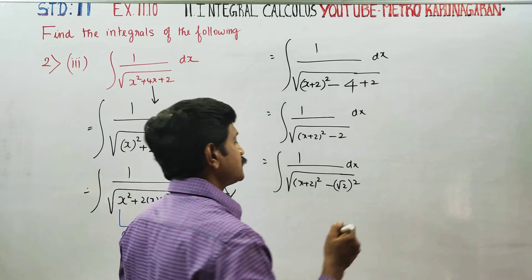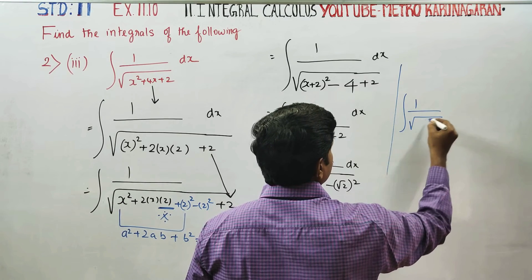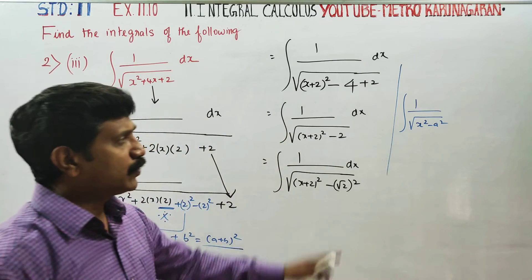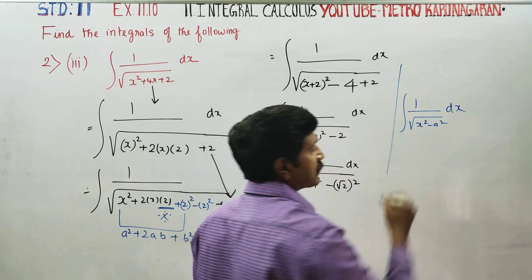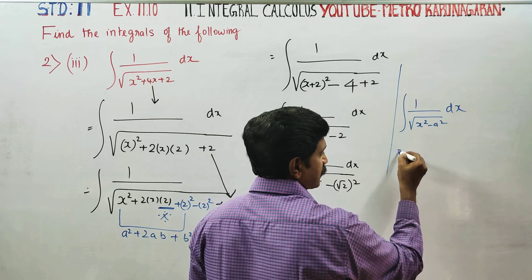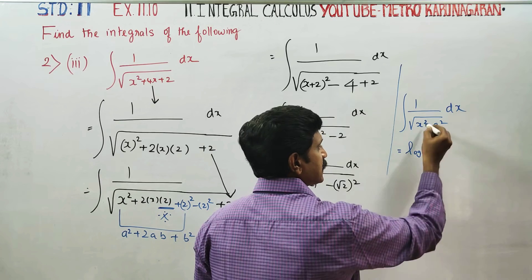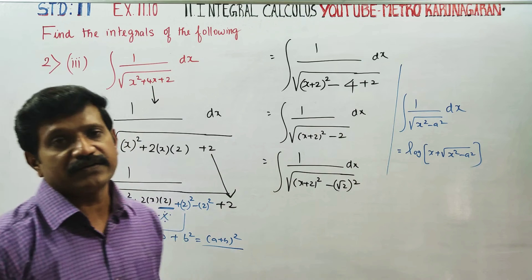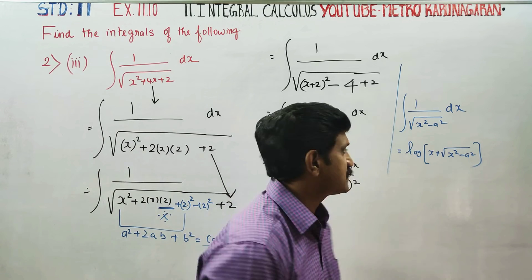Ready-made formula. The ready-made formula is: integration of 1 by square root of x squared minus a squared dx equals logarithm of x plus square root of x squared minus a squared, plus C.